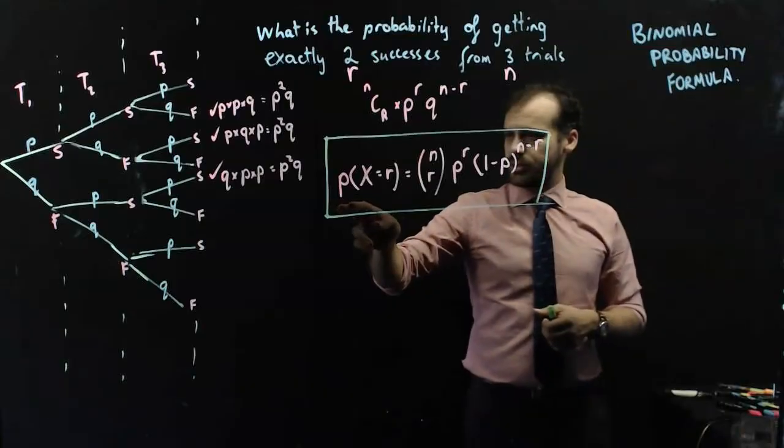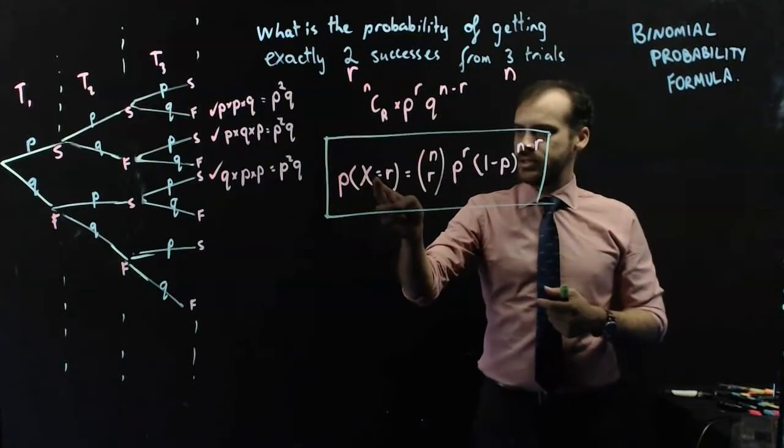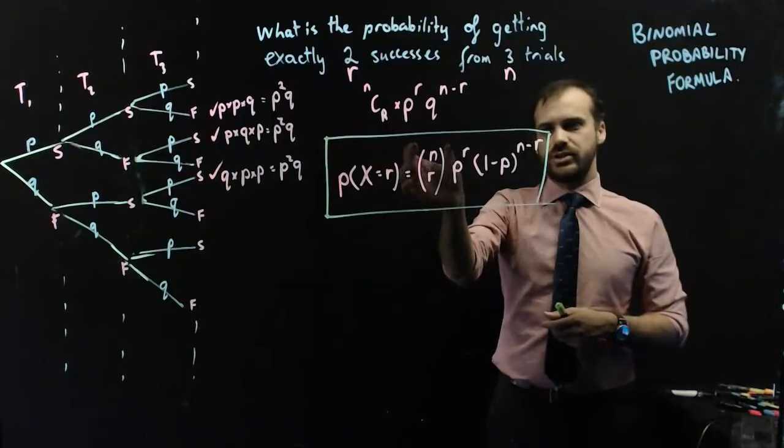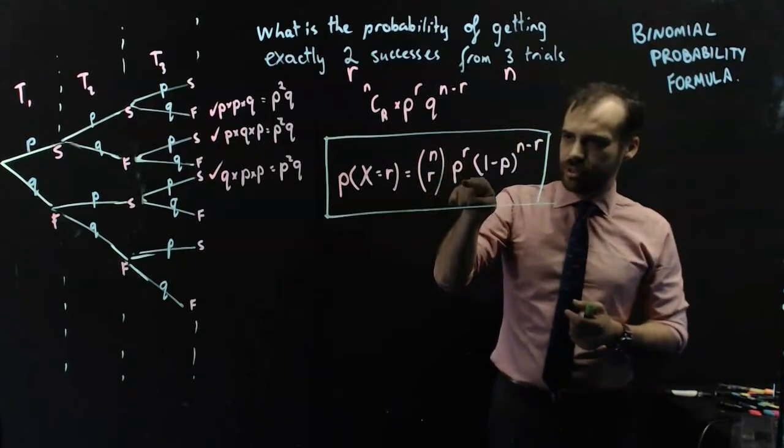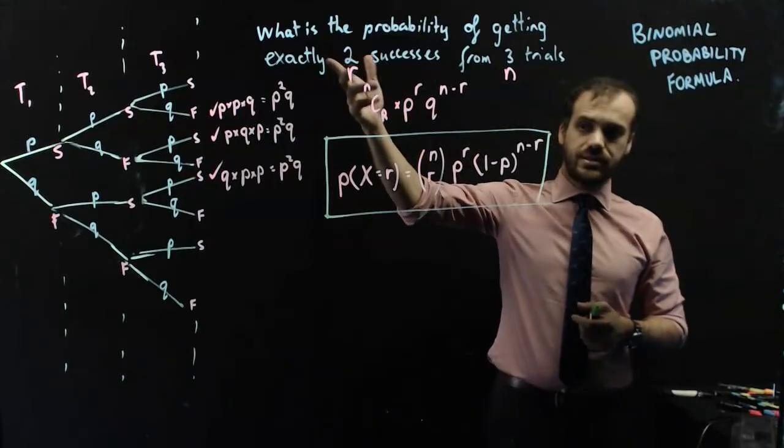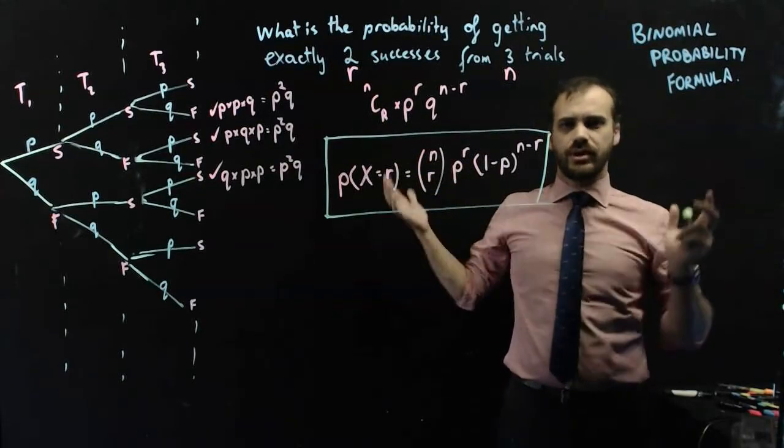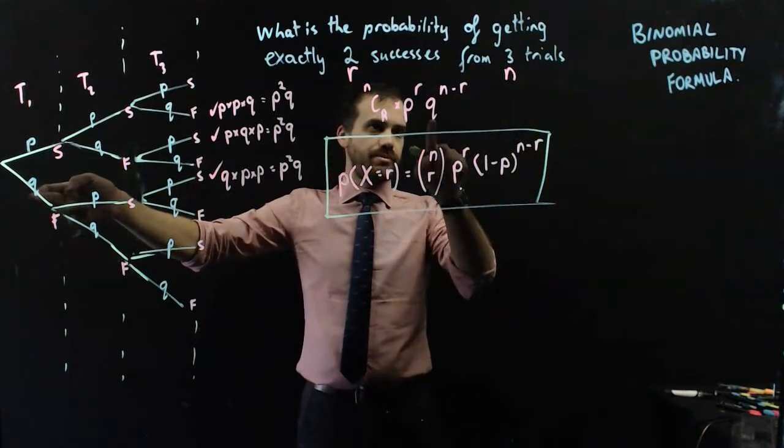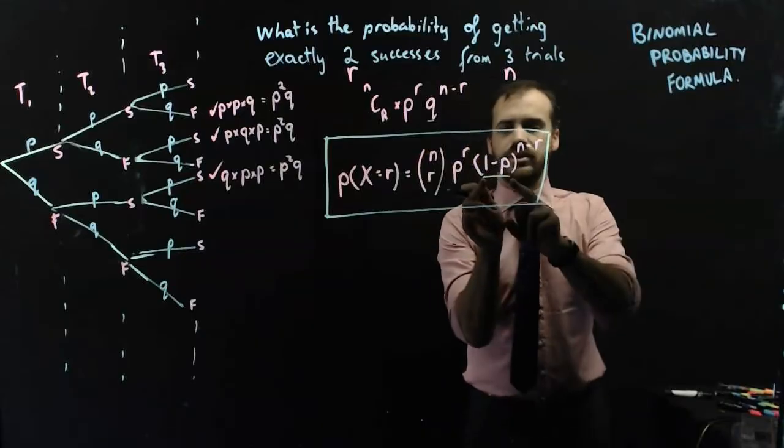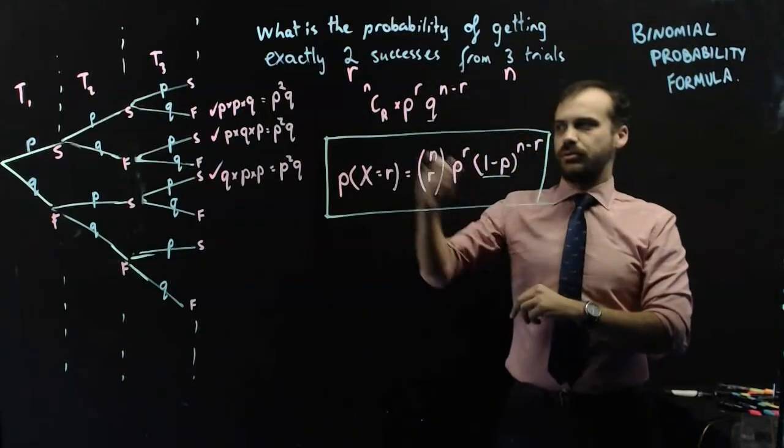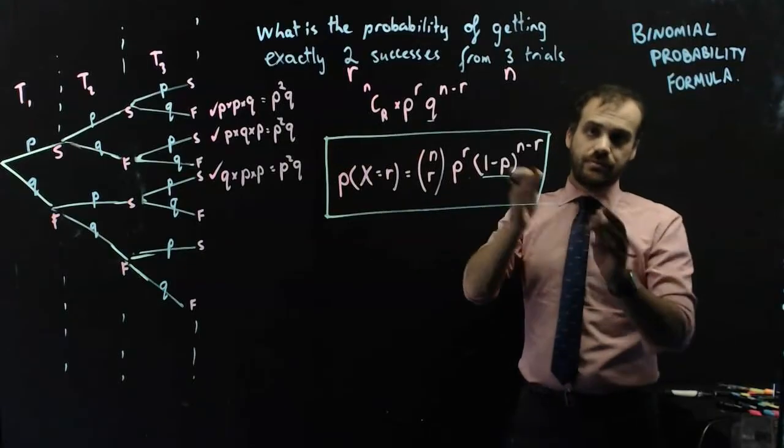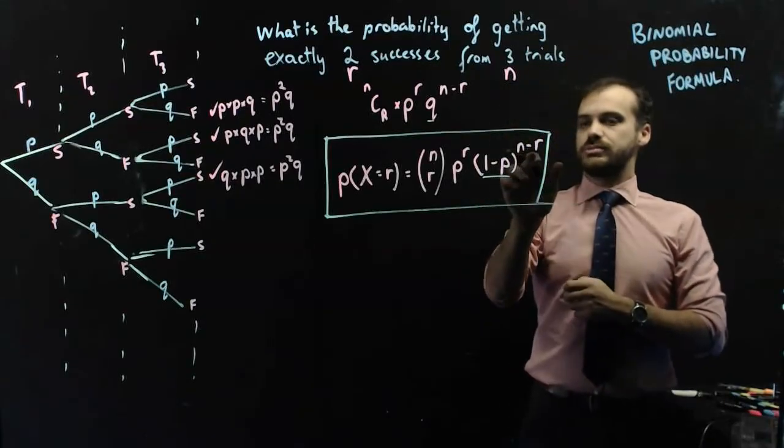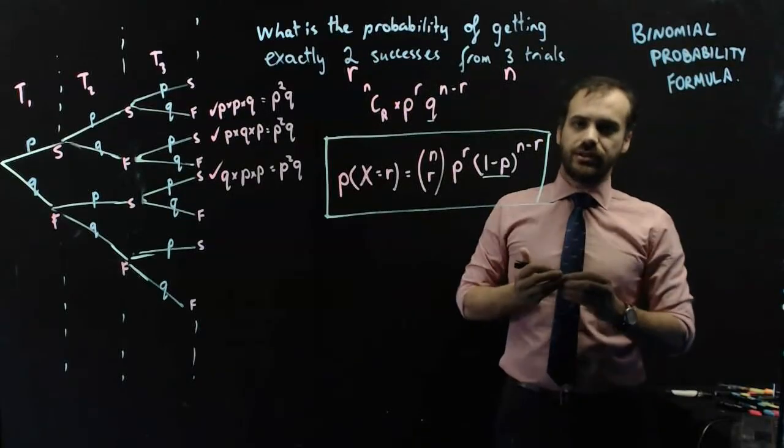So it says, the probability that our number of successes is equal to R, in this case it was 2, is equal to NCR, that's just another notation for NCR, times the probability of success to the power of number of successes. And then 1 minus P. Where did 1 minus P come from? Well, remember, if you're not succeeding, you're failing. So the probability of Q, which is what this bit is here, this is Q, is 1 minus P. So if the probability of success was 0.2, probability of failure is 1 minus 0.2, it's 0.8. To the power of N minus R, the number of trials minus the number of successes.